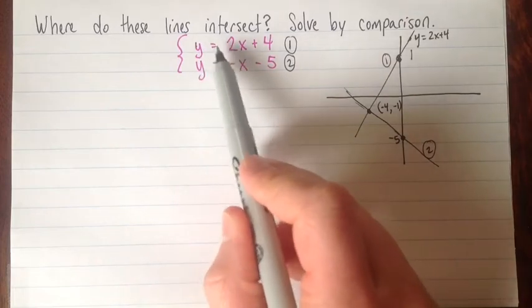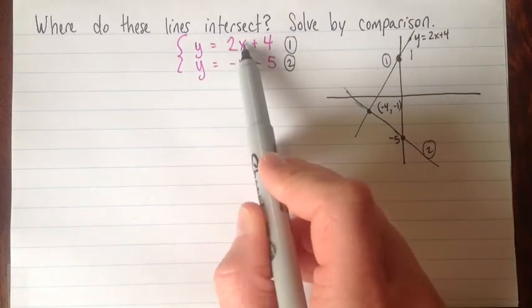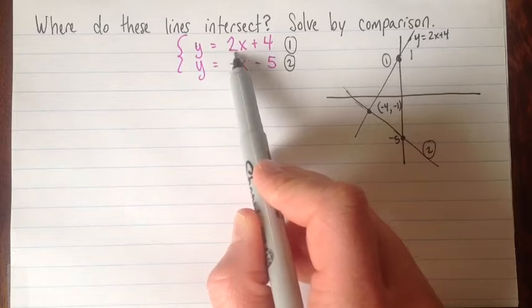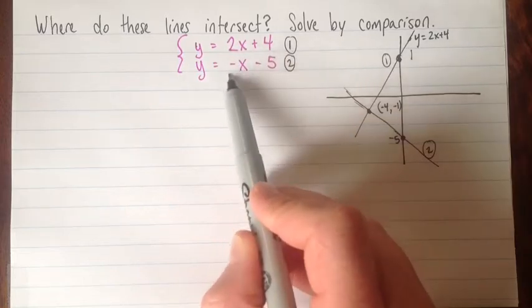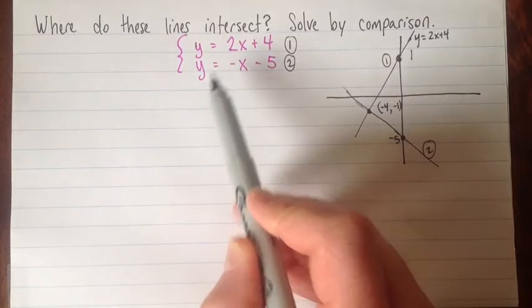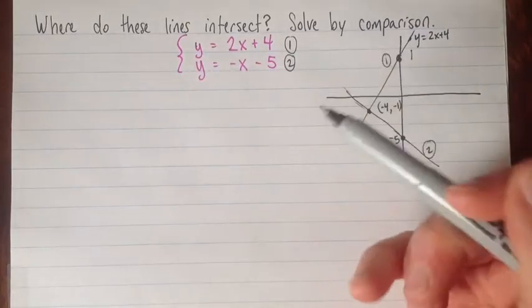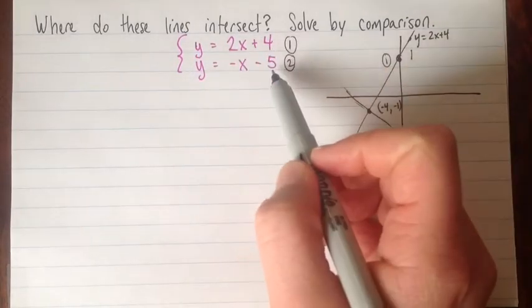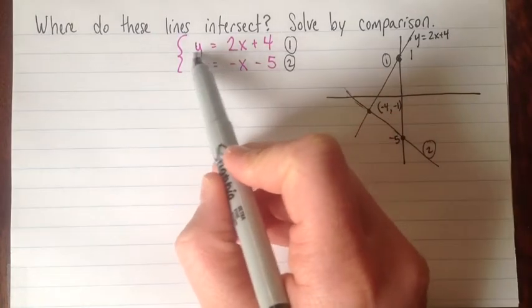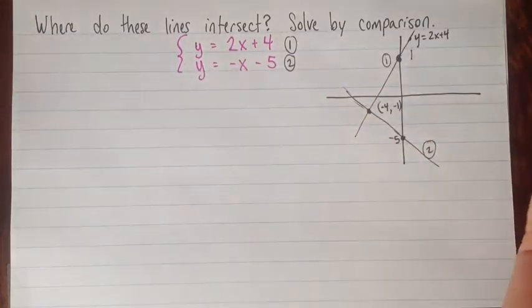So we do have both of these two things equal. And since both of these are equal to y, then what I can do is set these two right-hand sides equal to each other. This only works because they're equal to the same thing. So if we had x equals something for both equations, we could do it. But if we didn't have one side of the equation that was identical, we cannot do it.